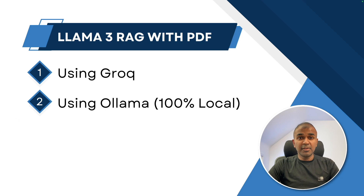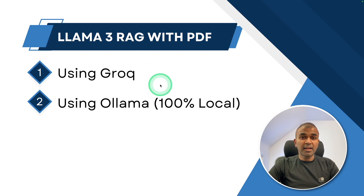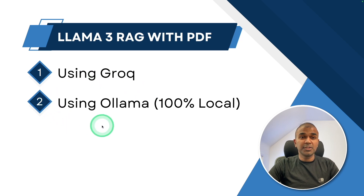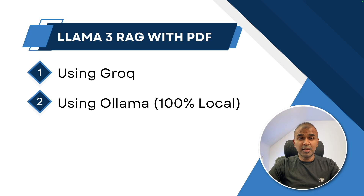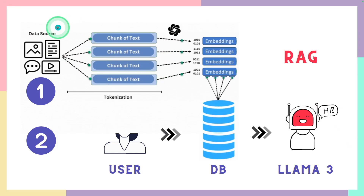In this we are going to see two different applications. One is RAG using Groq. The second is RAG using Ollama, which means 100% of your data is local and private. Generally a RAG application consists of two steps.